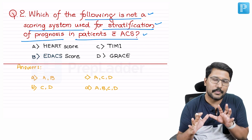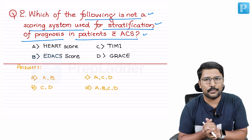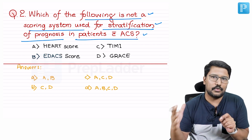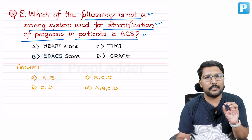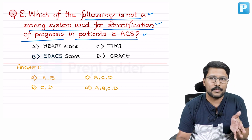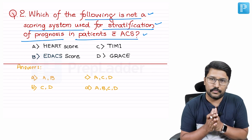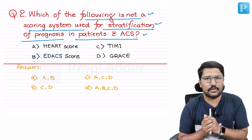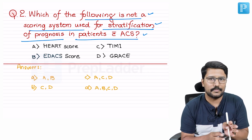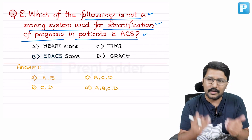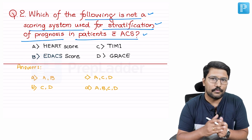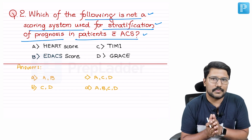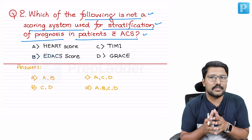Whenever you talk about a patient with chest pain and acute coronary syndrome, the first set of scoring systems are basically designed to assess the likelihood of acute coronary syndrome in a patient presenting with chest pain. When you have a patient in the emergency room with chest pain, you can assess the likelihood of that being an acute coronary syndrome using these scoring systems.